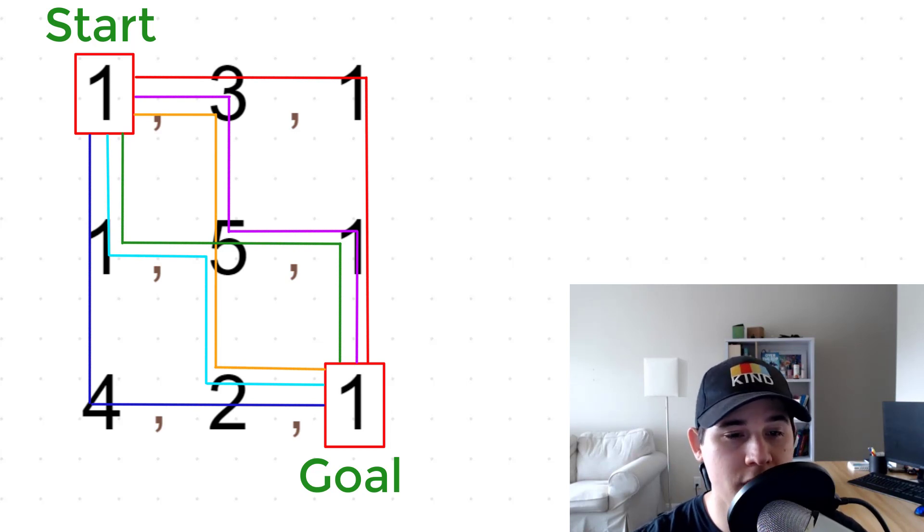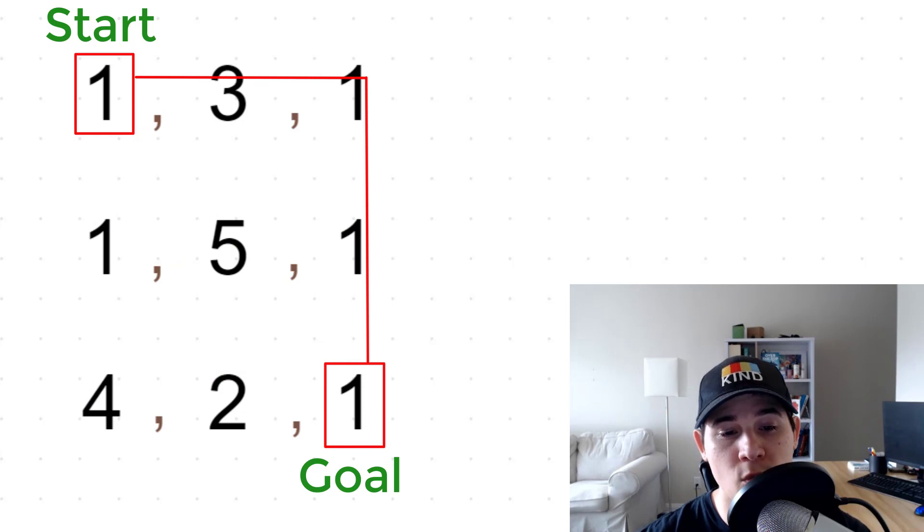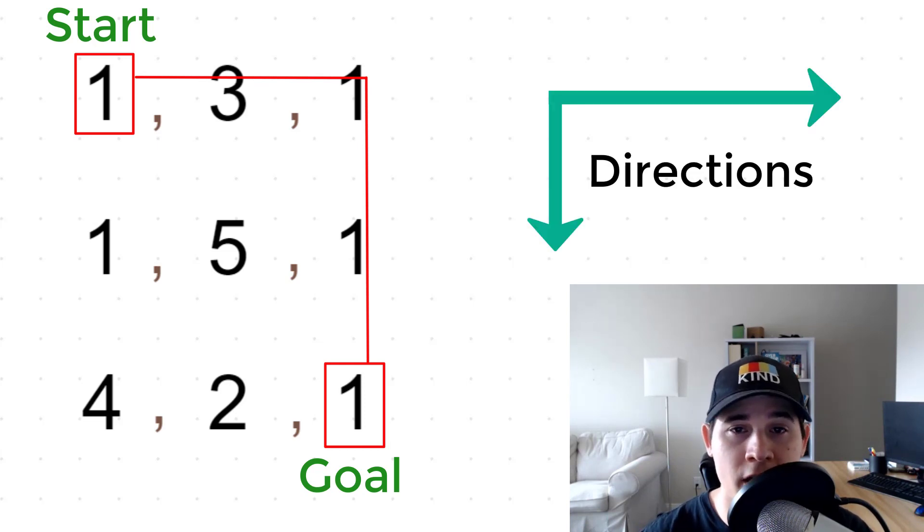So for this grid that we have here, 1-3-1, 1-5-1, 4-2-1, the shortest path would be 1-3-1-1-1, which has a value of seven. This path has the least sum in comparison to all of the other paths in this grid. So as it mentioned in the description, we can only move right or down in order to get to the bottom right position. And this information is really helpful because this is how we're going to incorporate dynamic programming to solve this problem.